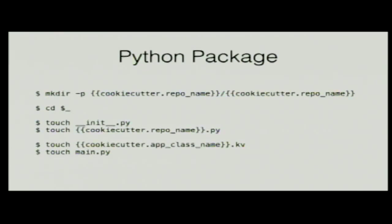Those of you familiar with templating with Jinja2 probably know the syntax already — it's two curly braces and the variable name. I'm using the repository name for both my project and my Python package. Inside I'm creating four files: an __init__.py to have a Python package, then the module for my application, a Kivy language file — Kivy uses its own declarative language for describing a user interface, which makes rapid prototyping very easy, though it's totally optional — and you can also write your UI programmatically.